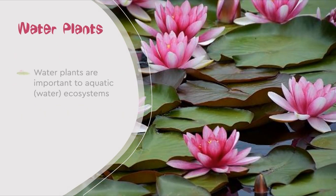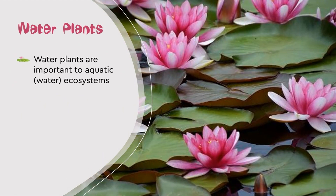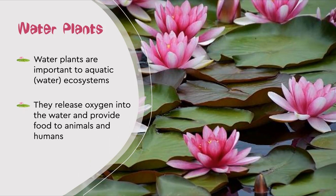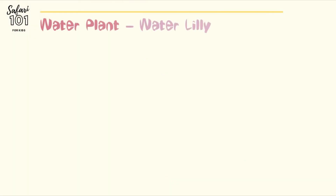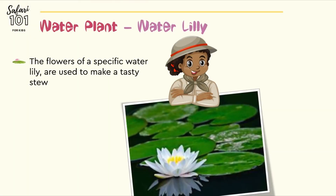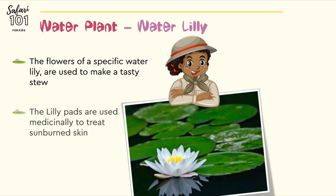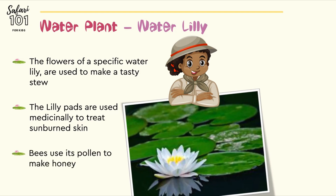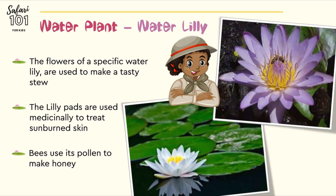A water plant. Water plants are important to the aquatic, or otherwise known as the water, systems. They release oxygen into the water and provide food for animals and humans — and they are also quite pretty. The flowers from the water lily can be used to make a tasty stew, known as water lily stew. The lily pads are used medicinally to treat sunburned skin. Bees can get pollen from the flowers and use this to make honey — can you see the bee on the flower?